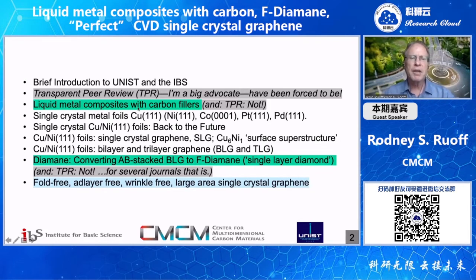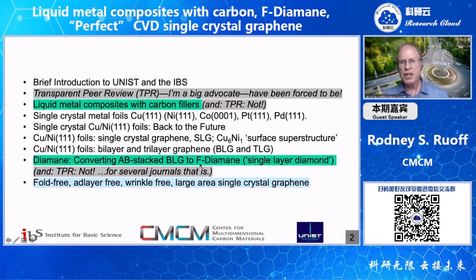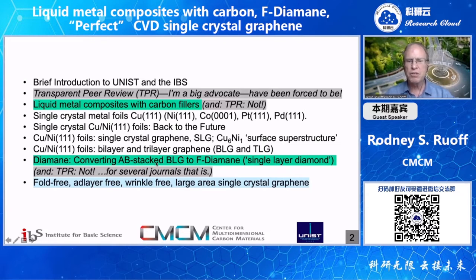Then I'll segue to talking about liquid metal composites with carbon fillers. These four topics build up to our ability to have AB-stacked bilayer graphene, which is the appropriate precursor for making diamane — which could be hydrogenated or, in our case, fluorinated. So F-diamane or single layer diamond. I'm presenting a pathway that led us to the ability to grow large enough area AB-stacked bilayer graphene. Then I'll segue to fold-free, ad layer-free, wrinkle-free, large area single crystal graphene achieved on a particular copper-nickel foil.